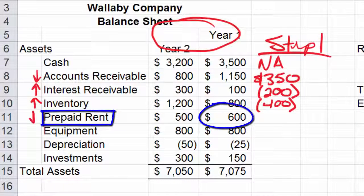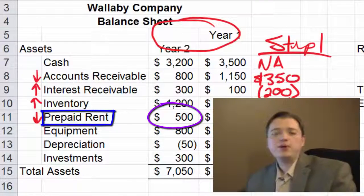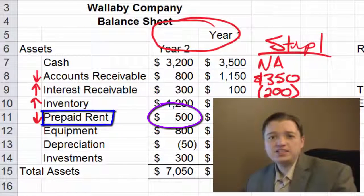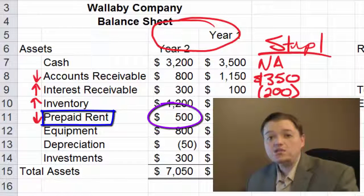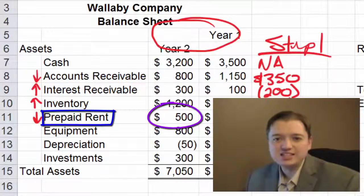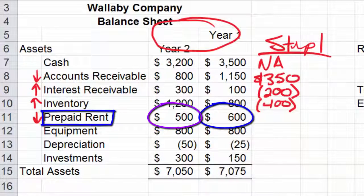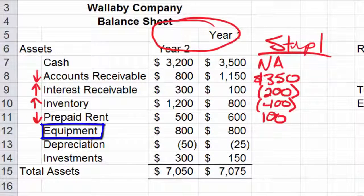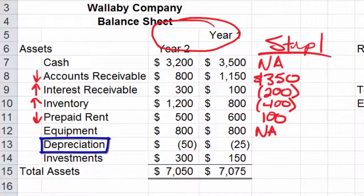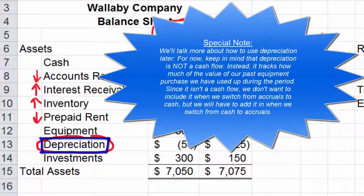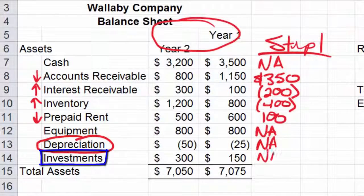Inventory also matches up with the income statement — it has gone up $400, so cash goes down. Prepaid rent has gone down. If prepaid rent goes down, I must have used up the prepaid rent instead of sending a check this period, which means I have more cash on hand because I paid it last year — so this is a positive change. Equipment I don't buy as part of day-to-day operations, so it won't match my income statement — I'll address it in the full statement of cash flows. Accumulated depreciation can be a shortcut when converting cash to accrual, but since I'm converting accruals to cash, I don't need it. Investments also aren't part of daily operations, so those are not applicable.